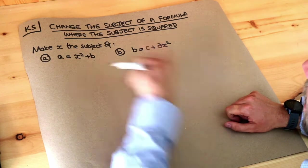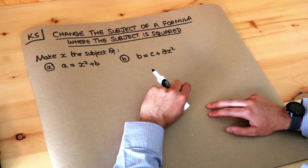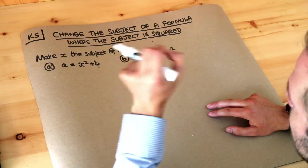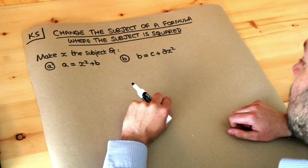Remember, to make x the subject of the formula means you want to get x on its own on one side of the equation. So you could write x equals something and get x on its own on one side.